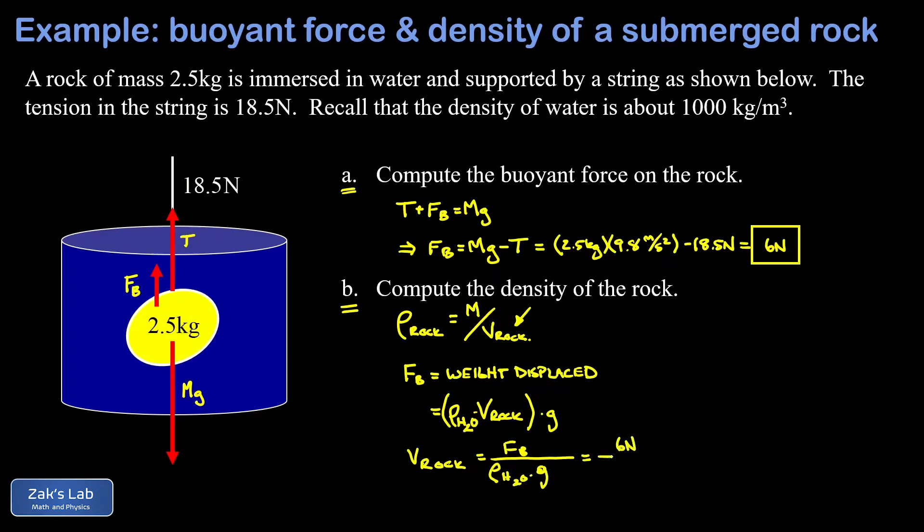Now we can just sub in all these numbers. I have 6 newtons for the buoyant force, approximately 1000 kilograms per cubic meter for the density of water, and approximately 9.8 meters per second squared for the acceleration of gravity. When I run these numbers I end up with 6.122 times 10 to the negative fourth cubic meters for the volume of this rock.